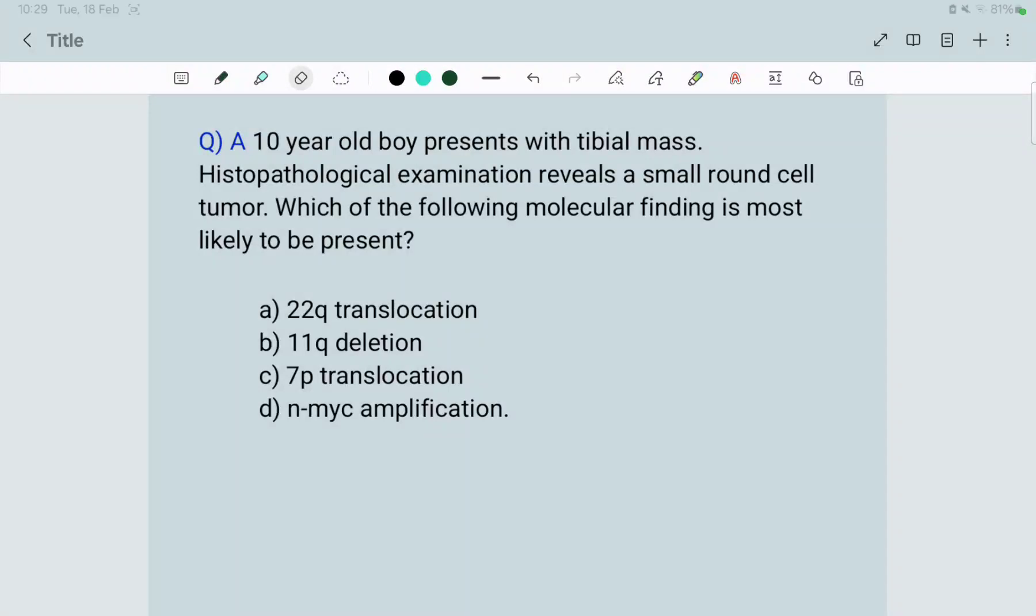Hi guys, let's start with the question of the day. A 10-year-old boy presents with tibial mass. Histopathological examination reveals a small round cell tumor. Which of the following molecular findings is most likely to be present? A) 22q translocation, B) 11q deletion, C) 7p translocation, or D) n-myc amplification.